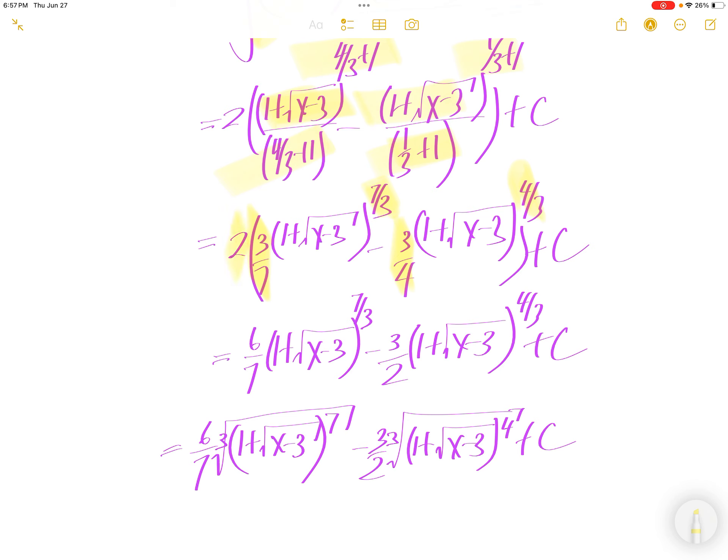Now, distribute 2 inside. 3 times 2 is 6 over 7. Distribute 2 into 3 over 4. 2 and 4 cancel. You get 3 over 2 left.